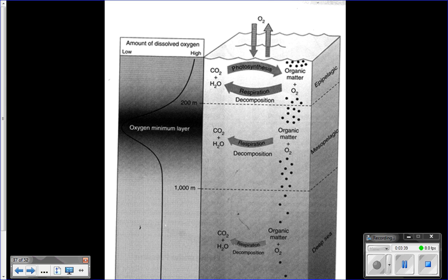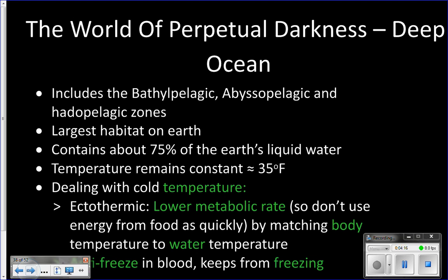So it's called the oxygen minimum layer — about 1,600 feet deep — and animals do still live there where there's almost no oxygen, which is crazy. The animals that live here have specialized, ginormous gills to try to extract whatever oxygen is left, and their hemoglobin is designed to work under these super low oxygen conditions, allowing them to use whatever little oxygen remains.